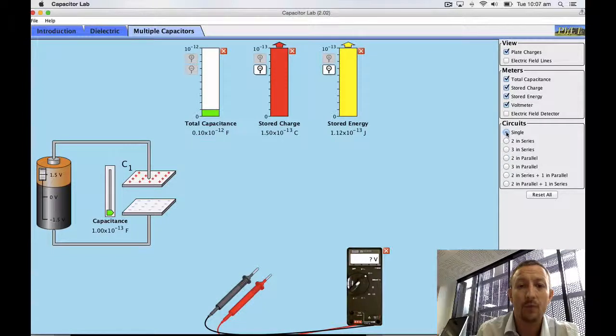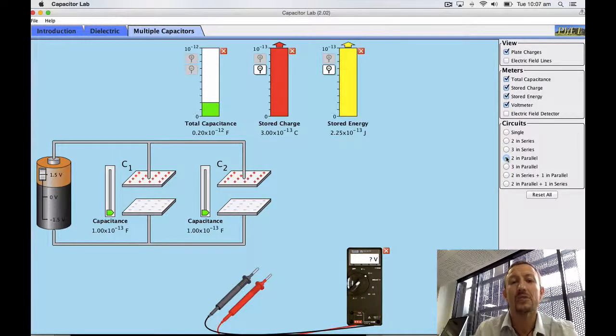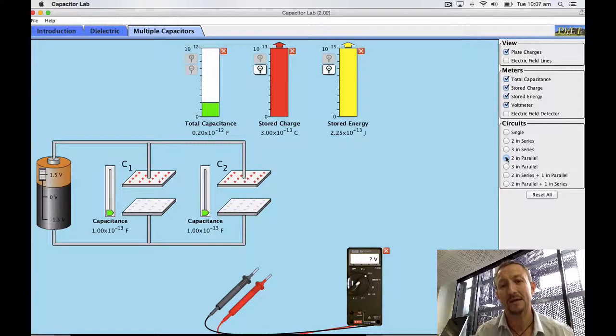If I go back to my single I've got 1.12 times 10 to the negative 13 joules, but put another one in parallel and the result is the overall stored amount of energy increases. So this is useful if I want to deliver more energy than what the battery is actually putting out. I can use two capacitors.